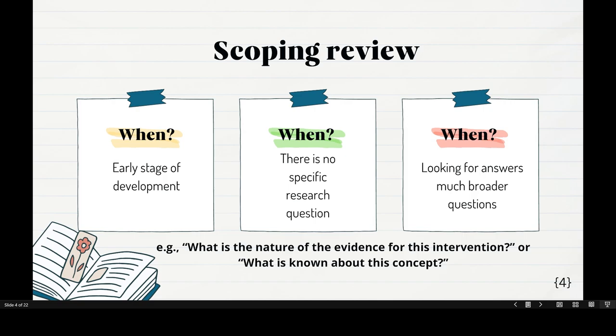The last reason is looking for answers for much broader questions. What are the broader questions? For example: what is the nature of the evidence for this intervention — meaning Gen.AI in this case — and what is known about this concept? These are the broader questions that people normally ask when conducting a scoping review.